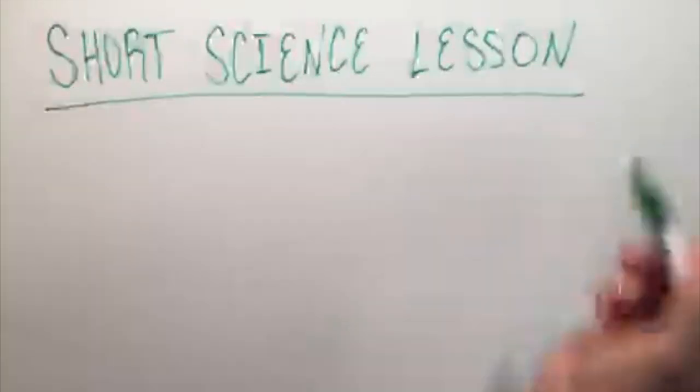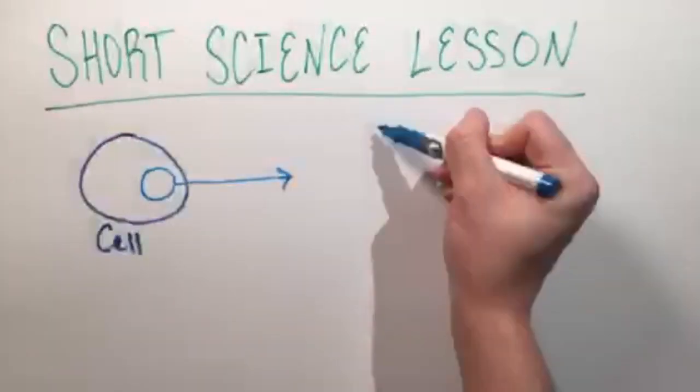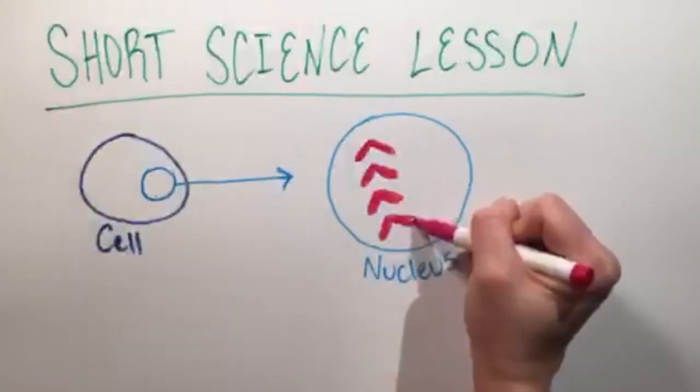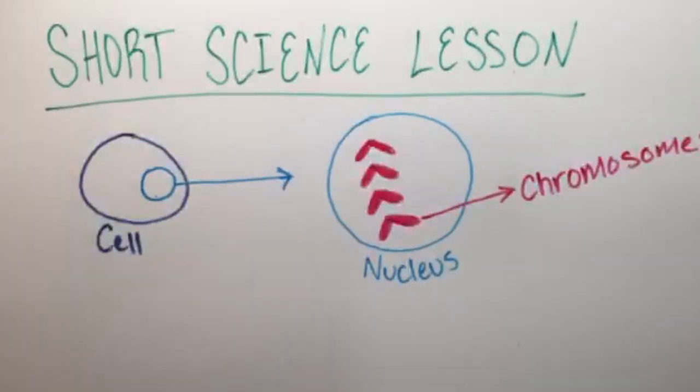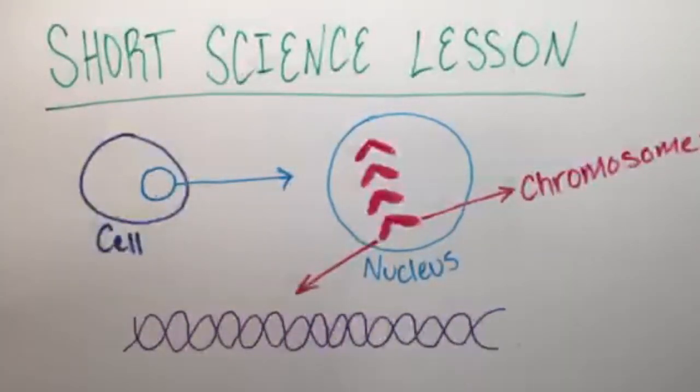Now for a short science lesson. All living organisms are made up of cells. Those cells contain a nucleus. Within that nucleus, there are pairs of chromosomes. Chromosomes contain gene sequences made up of DNA. These sequences are what tell the next cell exactly how to develop.